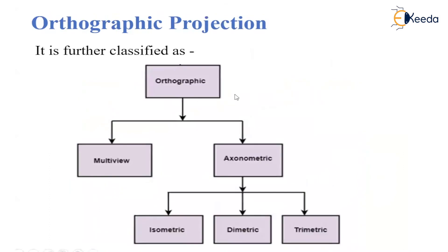Orthographic projection is further classified as multi-view projection and axonometric projection. Axonometric projection is further classified as isometric, diametric, and trimetric projection.